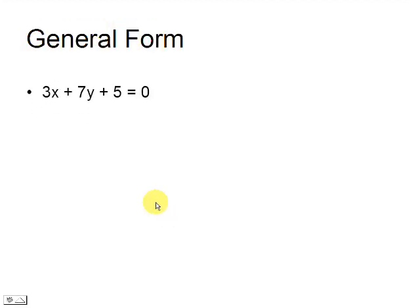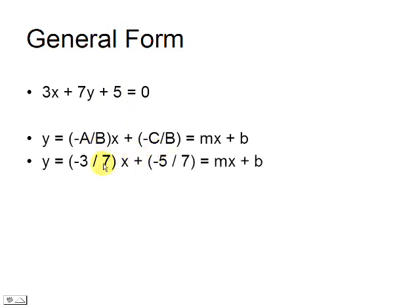In this example, the coefficient of x is 3, the coefficient of y is 7, and the constant is 5. Thus, the slope is -3/7, and the y-intercept is -5/7.